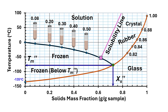Now we could easily visualize the four macro regions in the state diagram. Region 1 is below the glass line. Region 2 is above the glass line and below the maximal freeze concentration condition. Region 3 is above the maximal freeze concentration condition and below the freezing curve. Region 4 is above the freezing curve and glass line. Region 1 is the most stable — that is, low molecular mobility — and region 4 is the most unstable — that is, high molecular mobility.